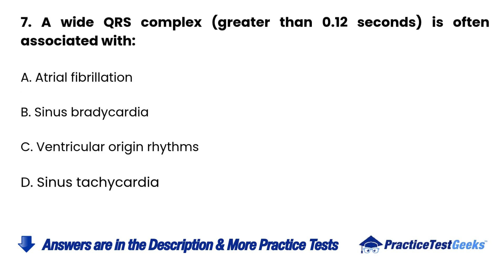7. A wide QRS complex greater than 0.12 seconds is often associated with: A. Atrial fibrillation. B. Sinus bradycardia.